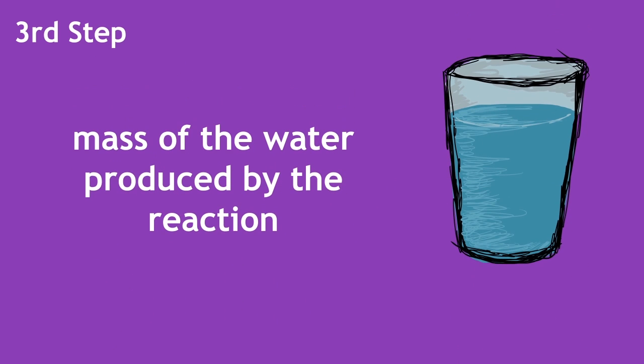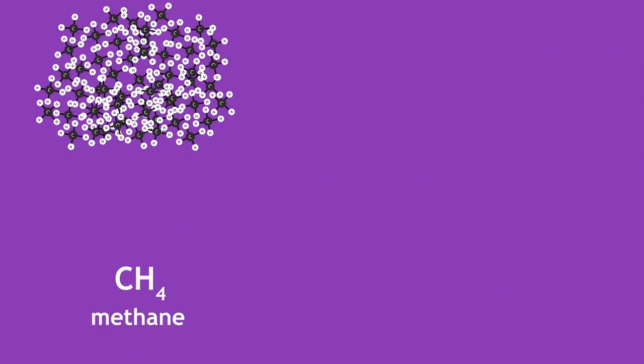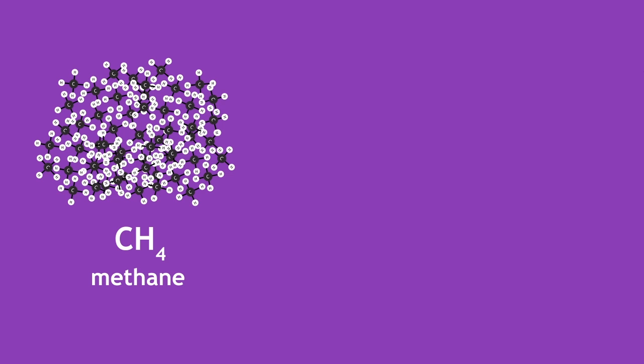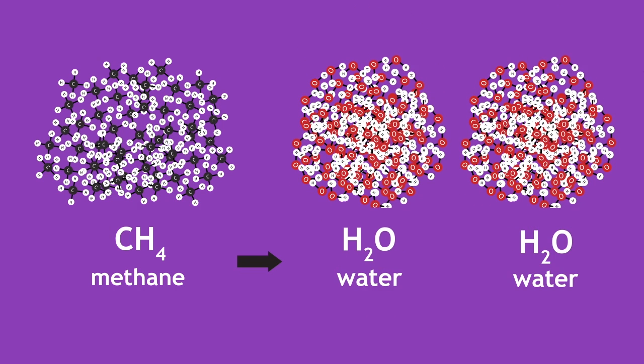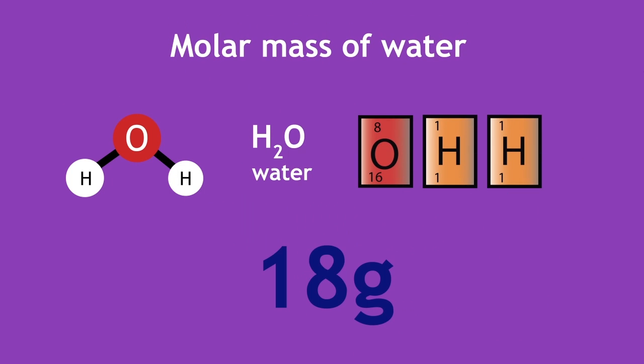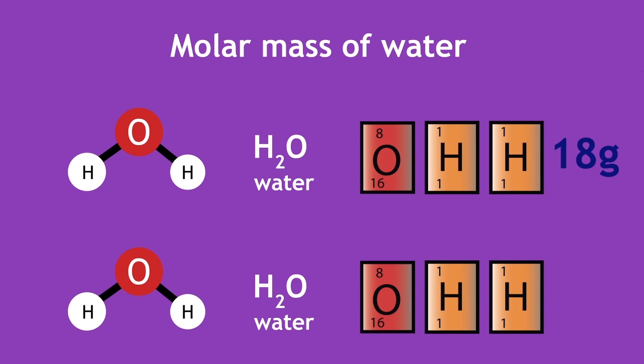The third step is to calculate the mass of the water produced by the reaction. One mole of methane produces two moles of water. If you know the molar mass of water is 18 grams, what do you think is the molar mass for 2 moles of water? Pause, think about this, and continue when ready.